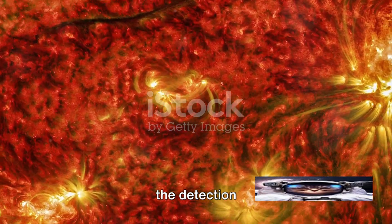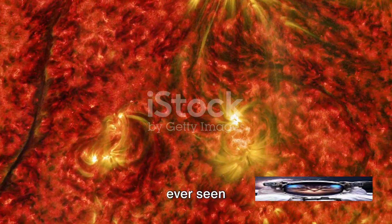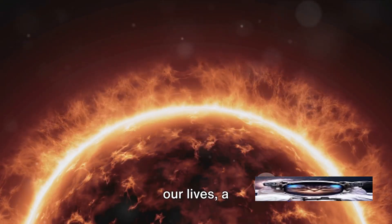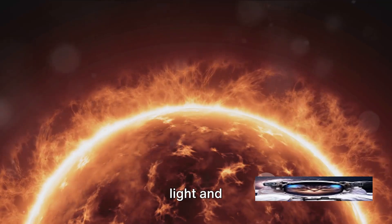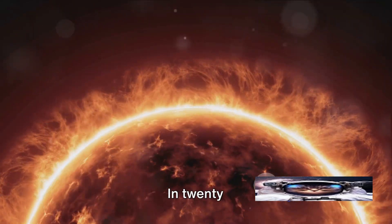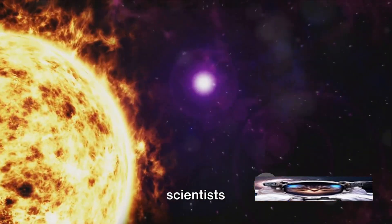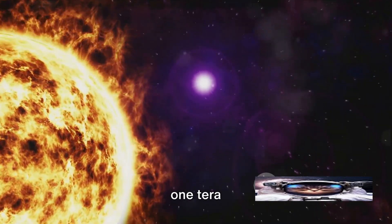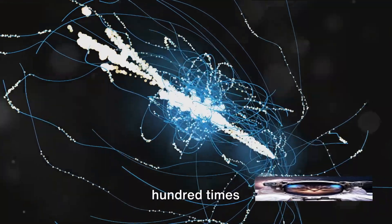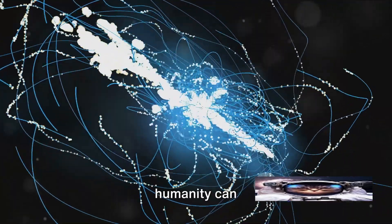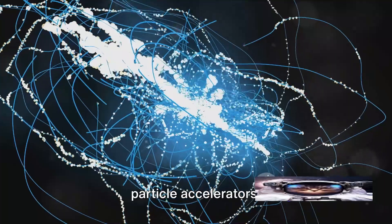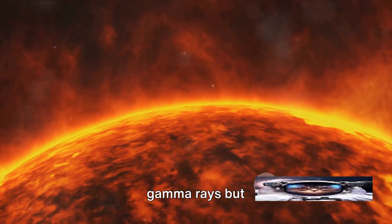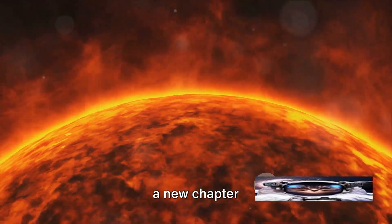Our first stop brings us to the sun and the detection of the highest energy gamma rays ever seen emanating from it. This celestial body that's been a constant presence in our lives, a source of light and warmth, has been hiding a secret. In 2023, scientists detected gamma rays from the sun with energy reaching up to one tera electron volt. This energy level is a hundred times more powerful than what humanity can generate with the most advanced particle accelerators. This discovery not only broke the record for sun-emitted gamma rays but also opened up a new chapter in solar physics, giving us a whole new perspective of our closest star.